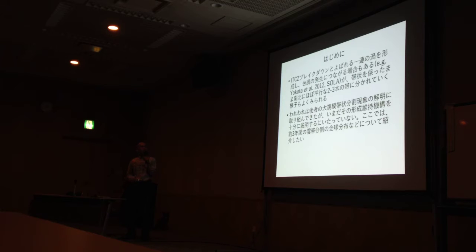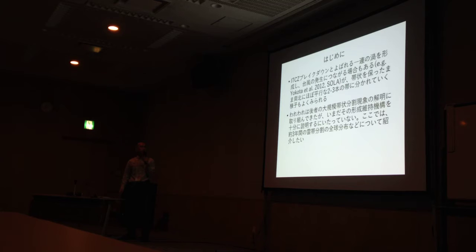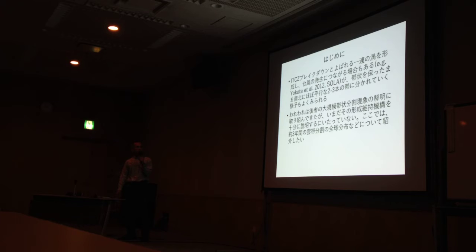このような東西に非常に広がった帯のような雲が変形していくというものの中には、ITCブレイクダウンというのがよく知られていて、これは一連の渦をいくつか形成して台風の発生につながる場合もありますので、よく研究されています。ところが、それと同じくらいの頻度で、帯状を保ったまま平行な帯に分かれていく様子も衛星画像ではよく見られます。これをずっとやってきたんですけど、なかなか形成時期間が分かりません。